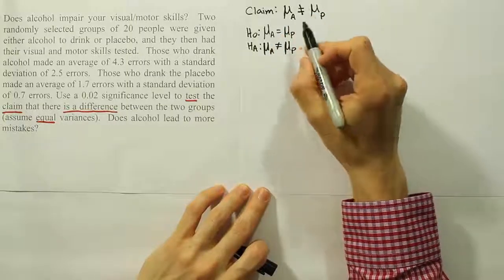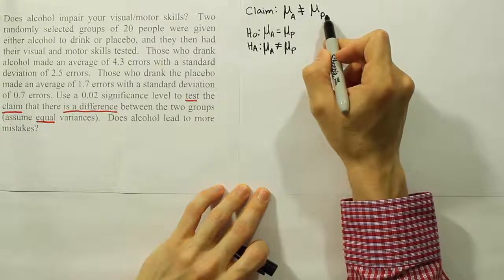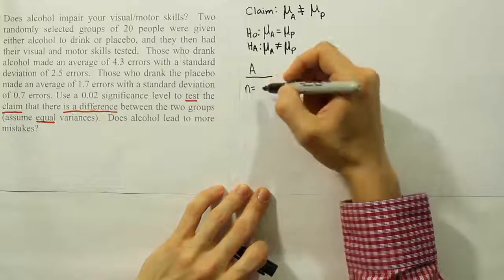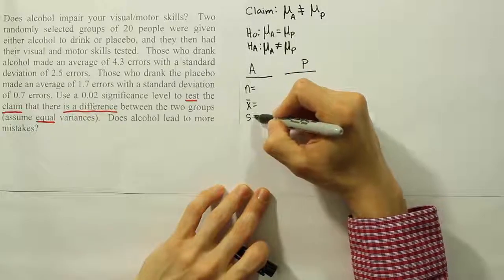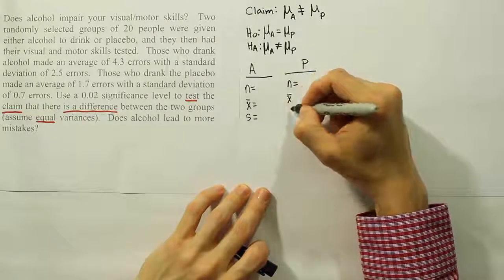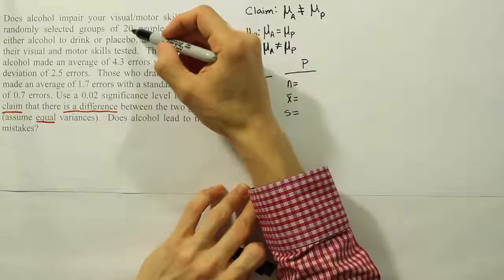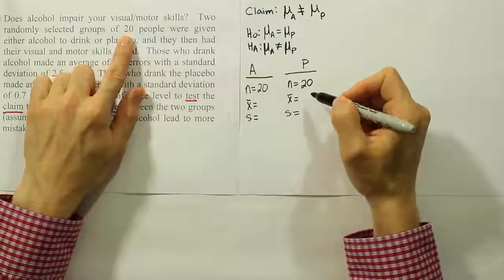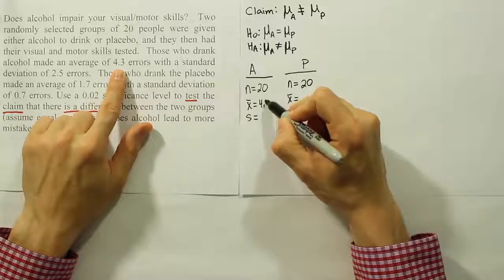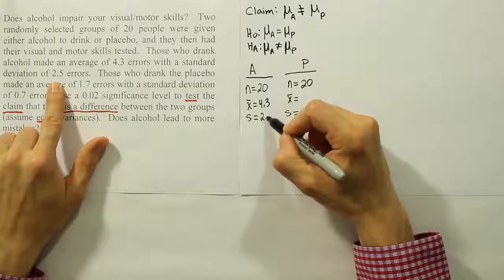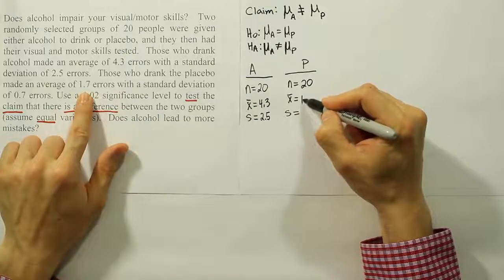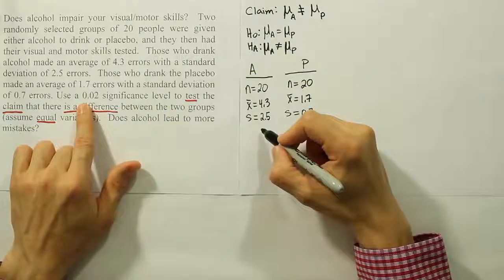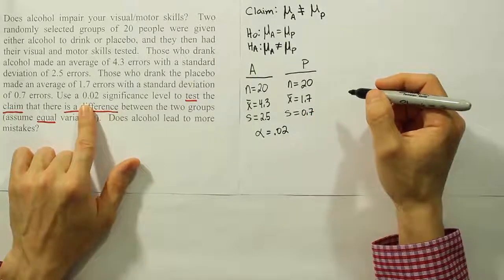Step two is to copy down all the data. We'll be consistent — alcohol group A first, then placebo group P. For group A: n_a = 20, x̄_a = 4.3, s_a = 2.5. For group P: n_p = 20, x̄_p = 1.7, s_p = 0.7. The significance level is α = 0.02, corresponding to the stated 2% level.